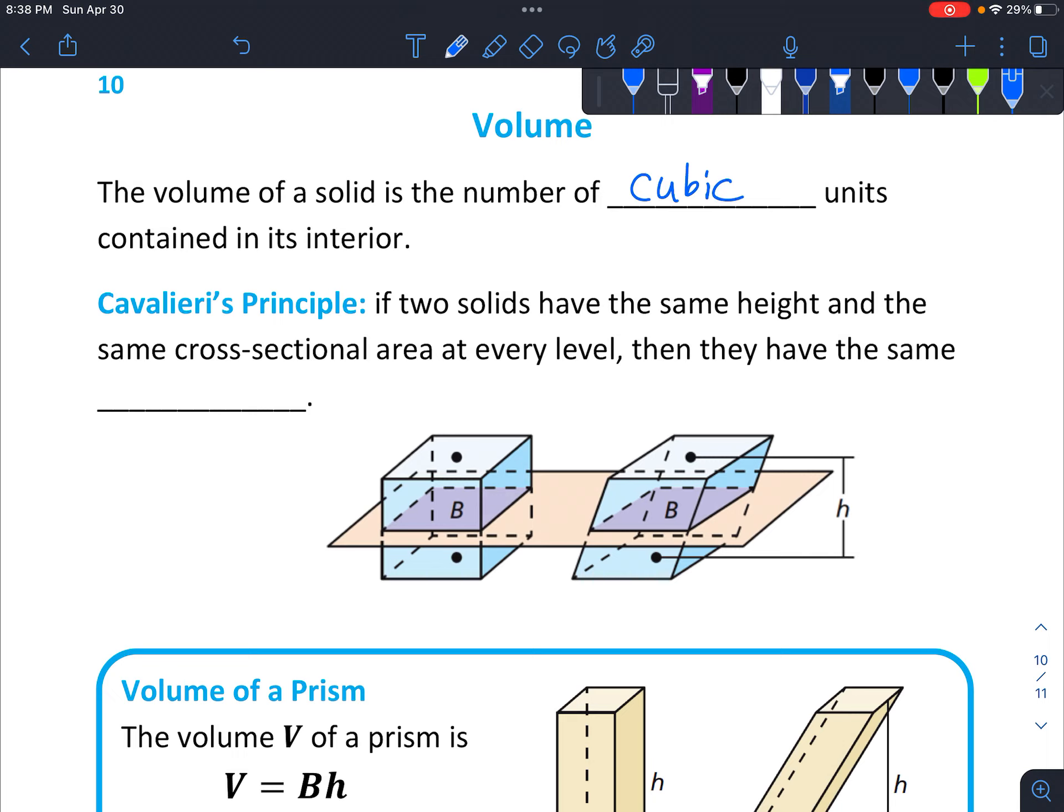So it's based on something called Cavalieri's principle. It says if two solids have the same height and the same cross-sectional area at every level, then they have to have the same volume.